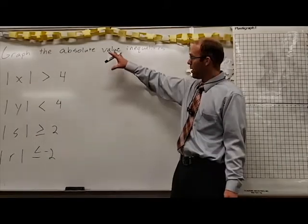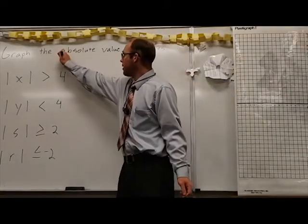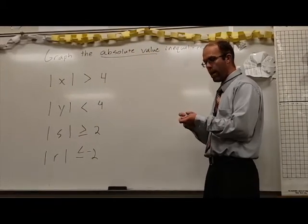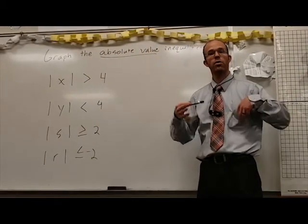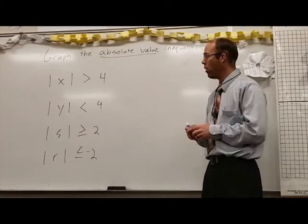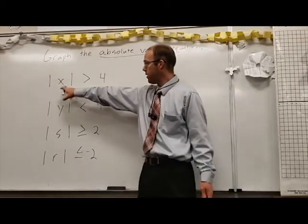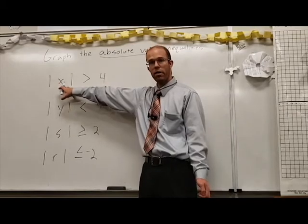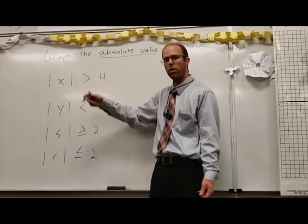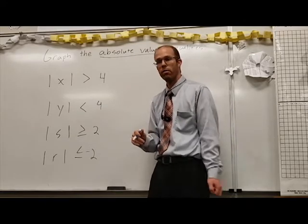We are now going to go back to working with absolute values. I want to quickly review that the absolute value refers to the distance of something from zero. So this is saying that the distance of a number from zero is bigger than four — in other words, it's farther than four units away from zero.